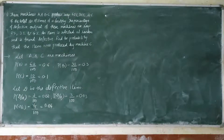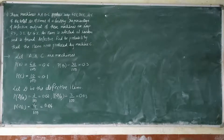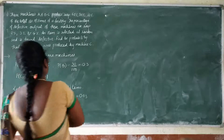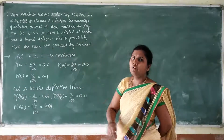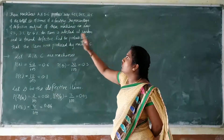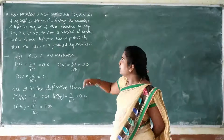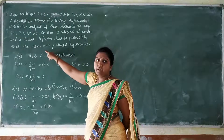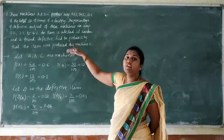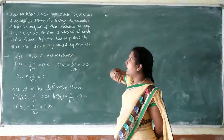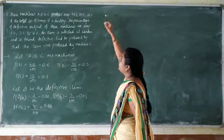An item at random is found defective. Find the probability that that item was produced by machine C. They have selected one item randomly and exactly don't know whether it is from A, B, or C. But they are asking the probability that the defective item came from machine C.